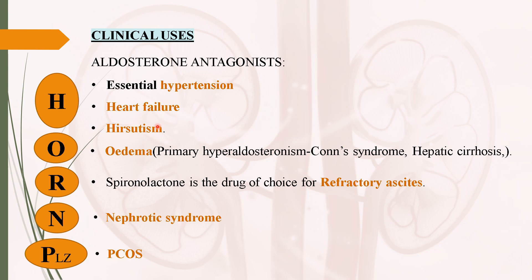The anti-androgenic effect of these drugs is used in the treatment of hirsutism and PCOS. These drugs are also used in edematous conditions like Conn's syndrome, hepatic cirrhosis, and nephrotic syndrome. Spironolactone is the drug of choice for refractory ascites.